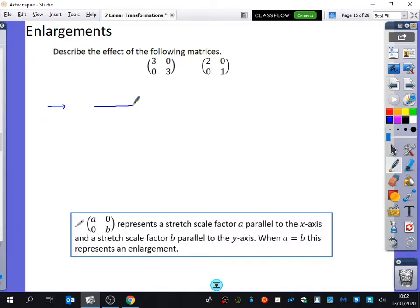Three times longer. j-hat looked like this. j-hat is three times longer. So the matrix 3, 0, 0, 3. Enlargement. Good. I was waiting for that. Centre origin, scale factor 3.